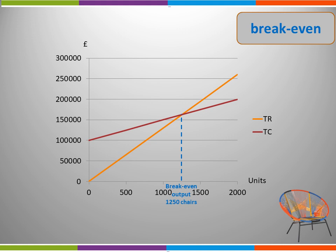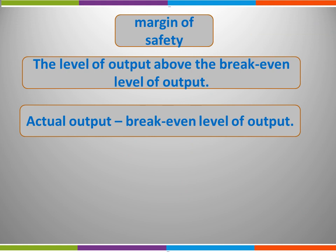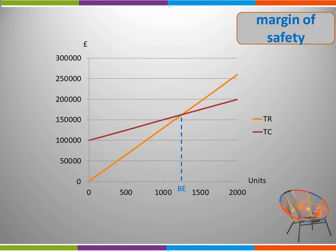We can use the breakeven chart not just to show profit, loss, and breakeven, but also margin of safety. Margin of safety is the level of output above the breakeven level of output, calculated using the formula: actual output minus the breakeven level of output. For our chair business, the breakeven level was 1,250 chairs. If actual output is 2,000 units, the margin of safety is 2,000 minus 1,250, giving 750 units.